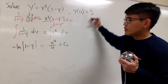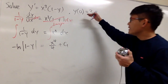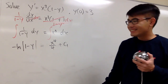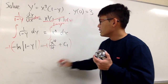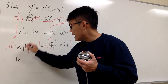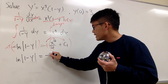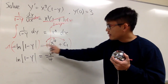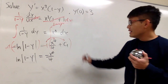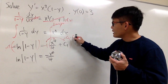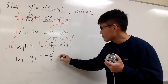Should I plug in the initial condition right now or not? I would like to isolate y first, and then plug in the initial condition after I get y isolated. This is negative ln, so let's multiply both sides by negative 1. That negative-negative becomes positive, and we have ln of the absolute value of 1 minus y, equal to — distributing the negative 1 — negative x to the fourth power over 4. Then negative 1 times c1 is negative c1, but negative c1 is also a constant, so let's call it c2.